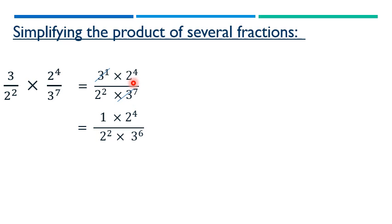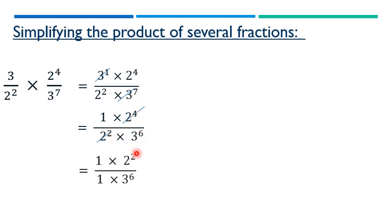For 2 exponent 4 and 2 exponent 2, same base so we subtract exponents: 4 minus 2 equals 2, giving 2 exponent 2 in the numerator. The final answer is 1 times 2 exponent 2 over 1 times 3 exponent 6, which simplifies to 2 exponent 2 over 3 exponent 6.